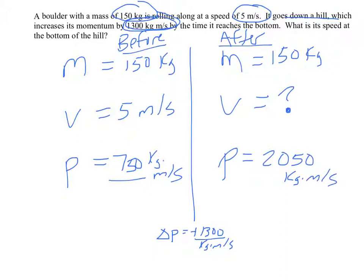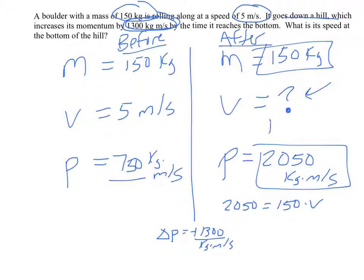And if I know the momentum at the bottom of the hill, and I know the mass at the bottom of the hill, I can now solve for the velocity at the bottom of the hill, because momentum equals mass times velocity. So I'm now just going to solve for that velocity, and when I do, I get 13.67 meters per second.